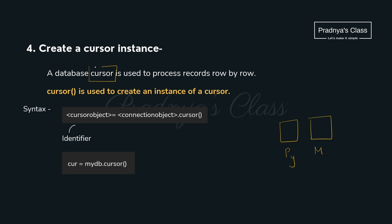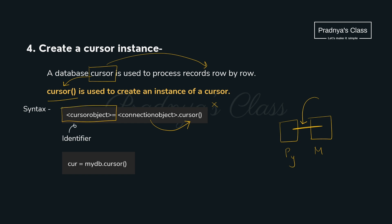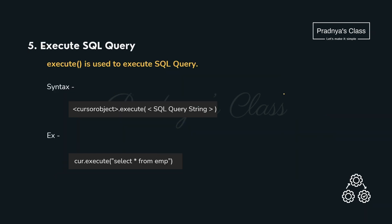Now we need one cursor which will process the records row by row. For that we are going to use the cursor function. This cursor function works on the connection object. Look at the syntax: connection_object.cursor(). It doesn't take any parameter. So with that we create one cursor object — let's give it the name cursor. Connection got established and we are ready to process the records too.